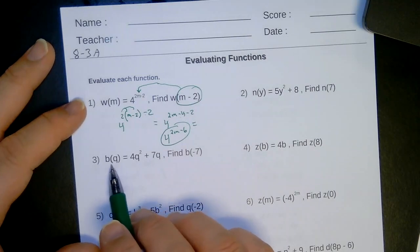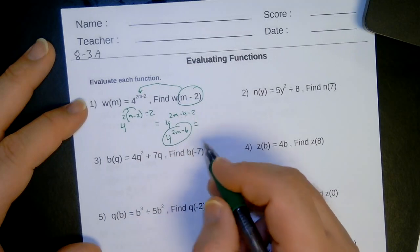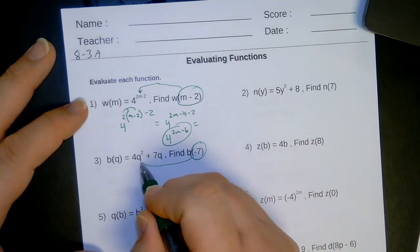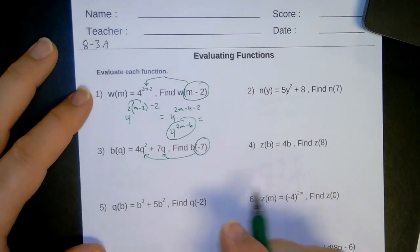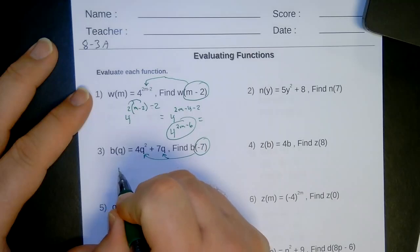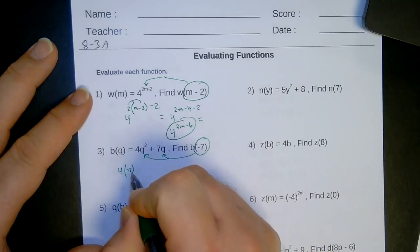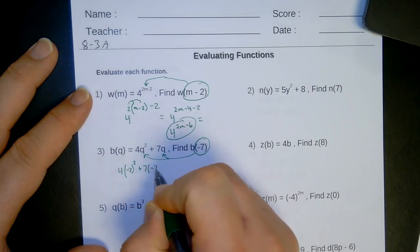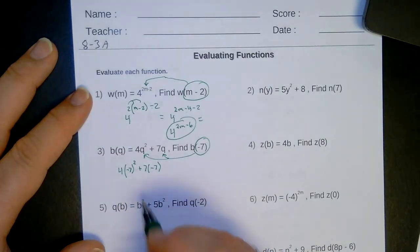So here's my function. B of q equals 4q squared plus 7q. I'm going to substitute negative 7 anywhere I see a q in my question. Again, substitution. So I start out with then 4, parentheses, negative 7 squared plus 7 times negative 7. Again, substituting all the way. That's all I have to do there.